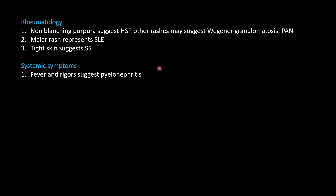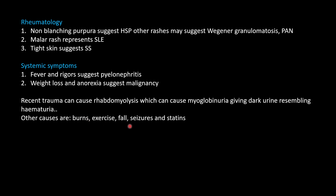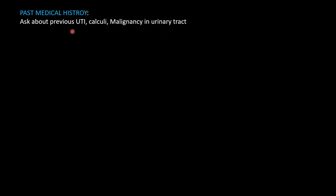Regarding systemic symptoms, fever with rigors along with hematuria may indicate pyelonephritis. Weight loss and anorexia mostly point to malignancy. Recent trauma should be asked about, as rhabdomyolysis can cause myoglobinuria, giving dark color to the urine that resembles hematuria. Other causes of rhabdomyolysis include burn injuries, exercise, falls, and seizures.